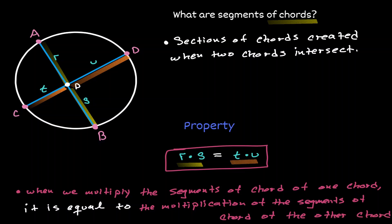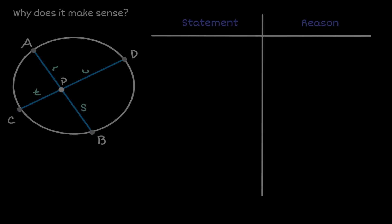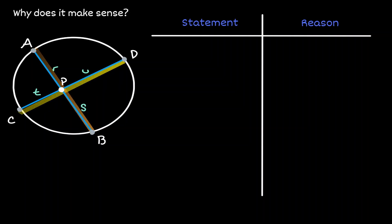Let's show why this is true. Here we have the same situation as before. We got two chords and they are intersecting at point P. So now let's consider a line segment that connects point A to D, and let's consider another line segment that connects point C to B.